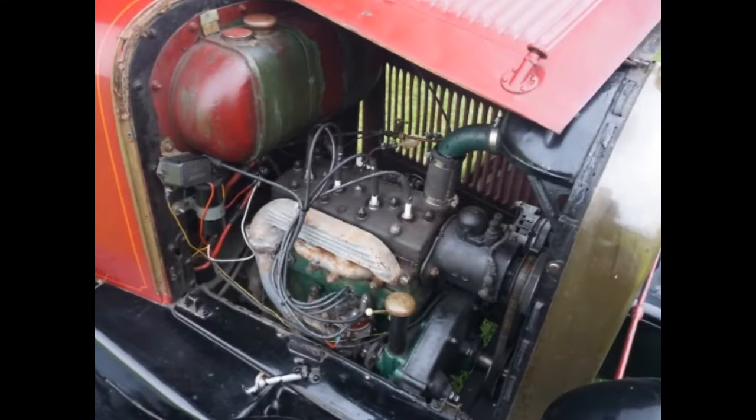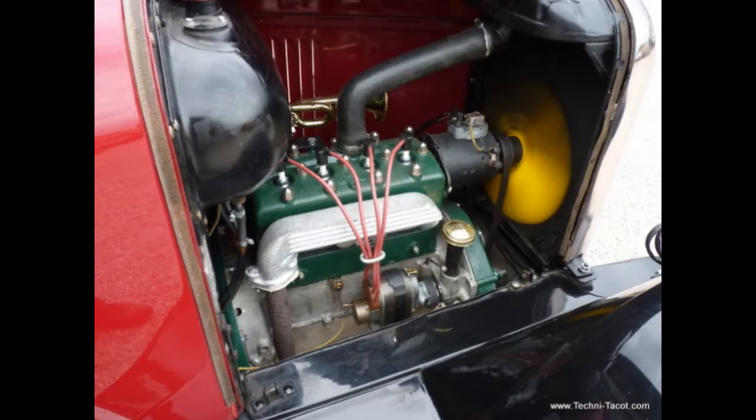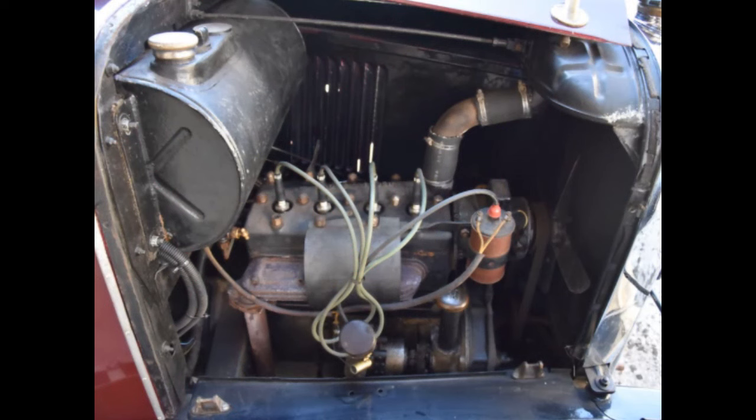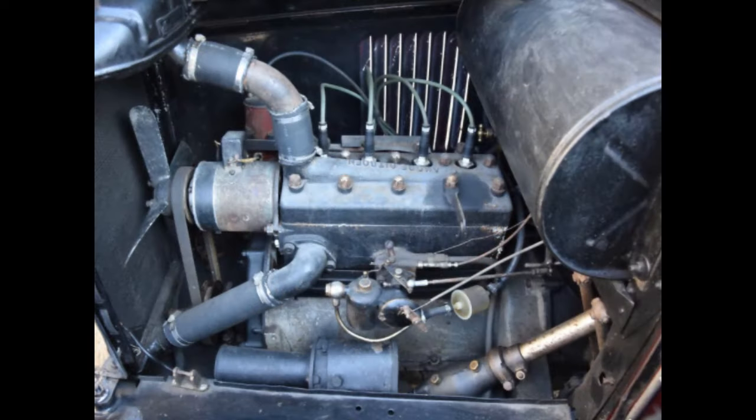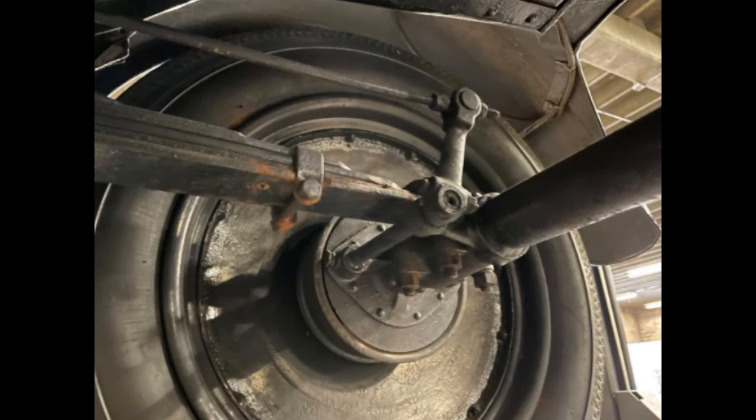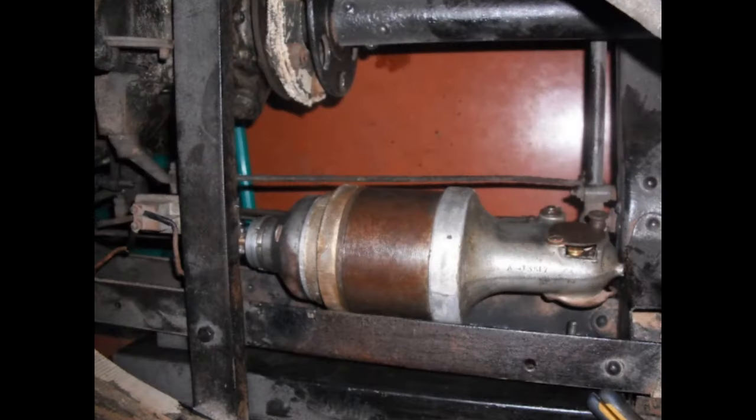Under the hood, the B14 was powered by a 1,583 cubic centimeter four-cylinder engine that developed 22 horsepower at the rear wheels through a three-speed gearbox. The suspension utilized semi-elliptical springs on all four corners, and the cable-operated brakes were assisted by Westinghouse electrical servos that gave them extra braking force.